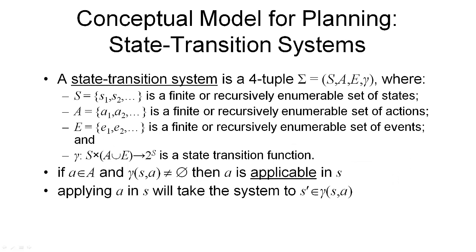The conceptual model we are using in planning is called a state transition system. Formally, a state transition system is defined as a four-tuple consisting of four components: S, A, E, and gamma. The first component, S, is a finite or recursively enumerable set of states. So these are all the possible states the world can be in. This set can be finite or recursively enumerable, which means infinite, but in most of the examples we'll be looking at, we have only finite sets of states.